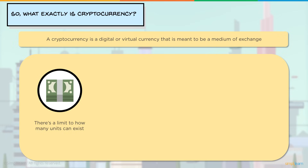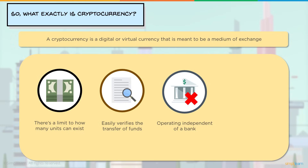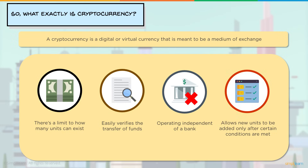A cryptocurrency is a digital or virtual currency meant to be a medium of exchange. It is similar to real-world currency except it has no physical embodiment, and it uses cryptography to work. Key features include: a limit on how many units can exist — for Bitcoin this limit is 21 million, after which no more will be produced; easy verification of fund transfers using hashing algorithms; operation independent of a bank or central authority in a decentralized manner; and new units can only be added after certain conditions are met — for Bitcoin, only after a block is added to the blockchain is the miner rewarded.